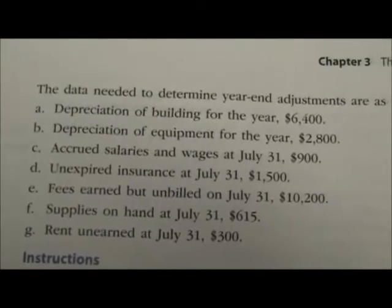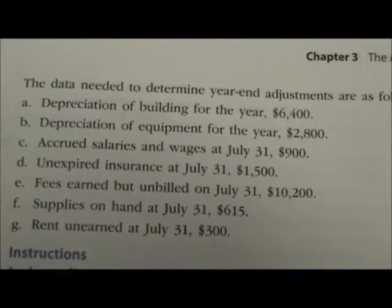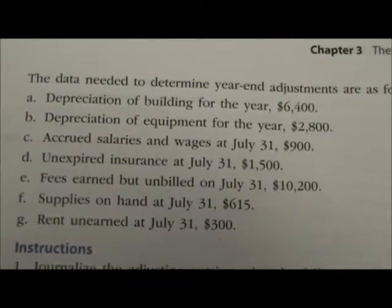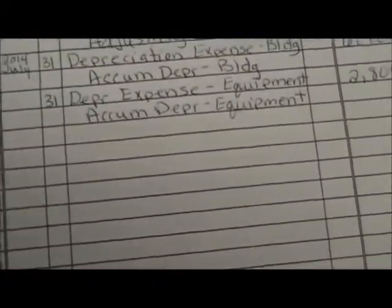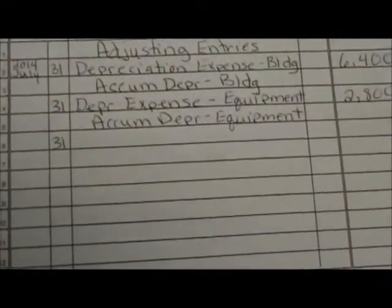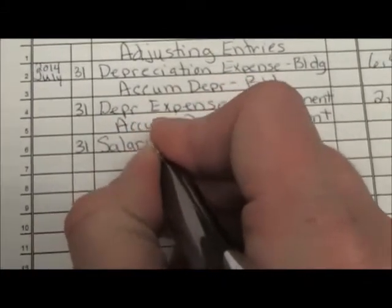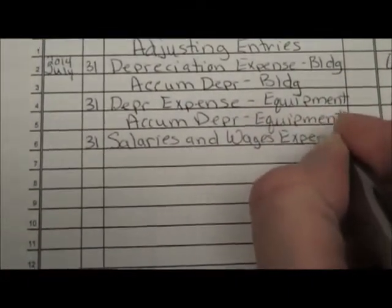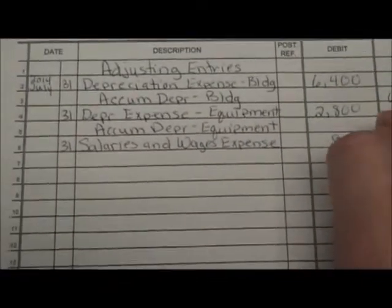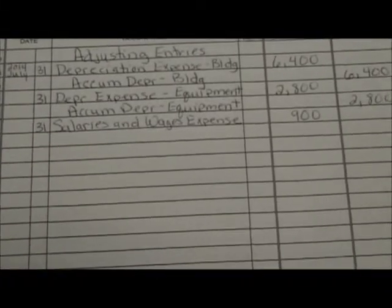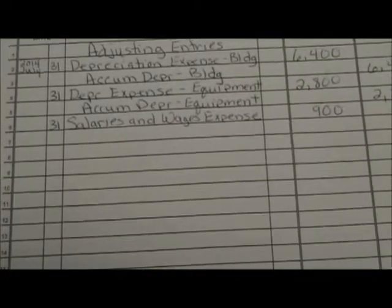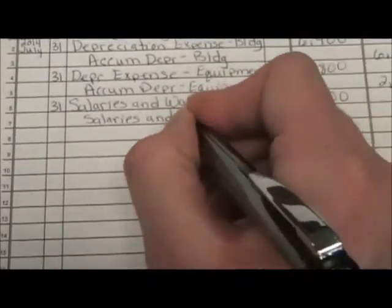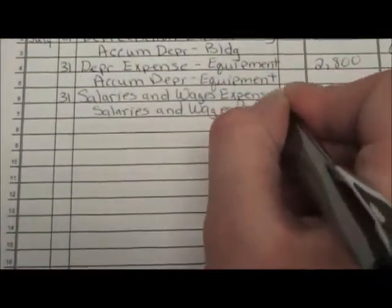Letter C: Accrued salaries and wages at July 31st, $900. The first thing we're going to do is put in our date, and we're going to debit the expense — Salaries and Wages Expense — for $900. Because we're recording salaries and wages that we have not paid yet, we're going to credit Salaries and Wages Payable. We have not paid this $900 yet, so we credit Salaries and Wages Payable.